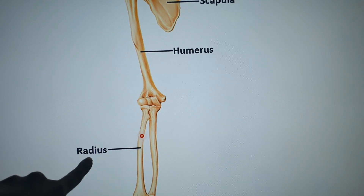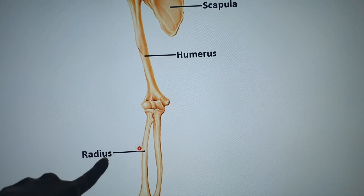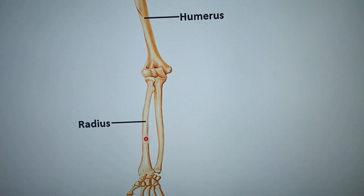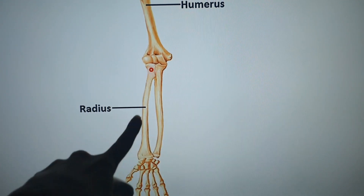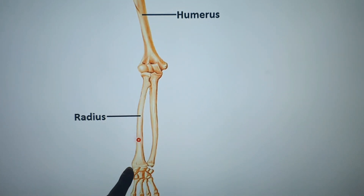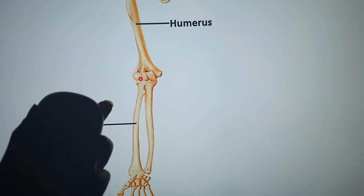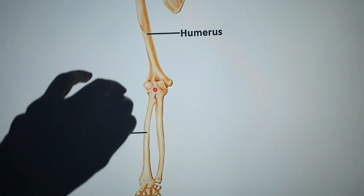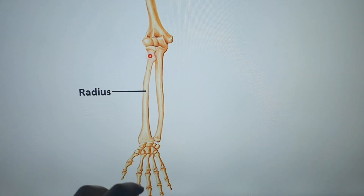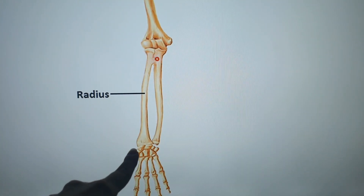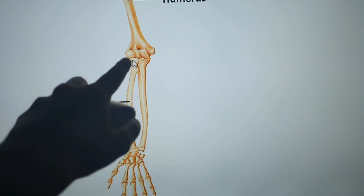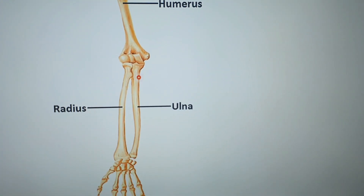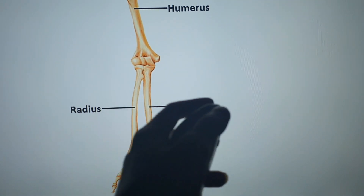On the lateral side of the forearm we have the radius. On the medial side we have the ulna. The radius is lateral and the ulna is medial. The region between the elbow and the carpals includes the head of the radius on the lateral side and the ulna on the medial side.